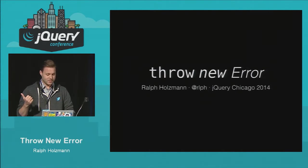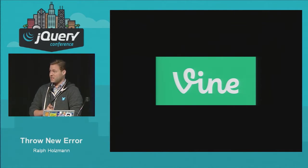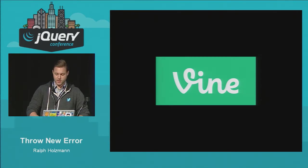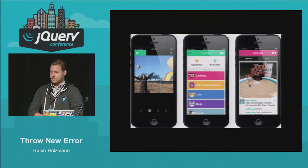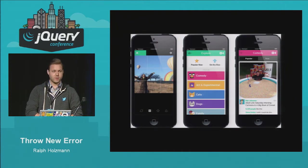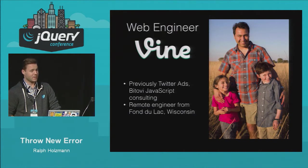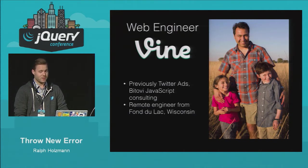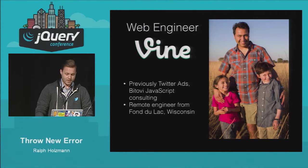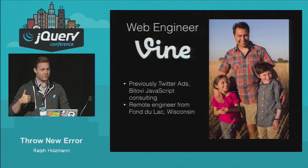We're going to be talking about errors today. For those who don't know me, I work on the Vine web team. Vine is a mobile app where you can watch little six-second videos. We have a bunch of creative camera tools. It's also a Twitter-owned and operated company. Before I was at Vine, I was on the Twitter ads team, helping promoted tweets show up in your clients. You're welcome. And I work remotely from Fond du Lac, Wisconsin, which is actually just like a three-hour drive north from here.